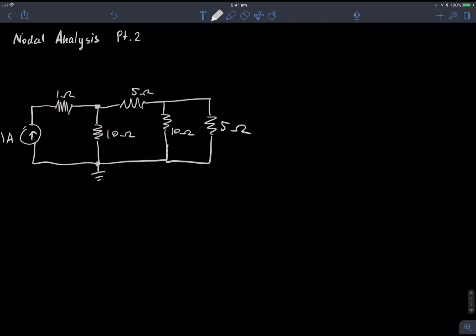Alright, continuing on from my last video, I did nodal analysis with one node. I'm going to do it now with two nodes. I'll just mark in the nodes for you here. I'm going to call this one V1 and this one V2.